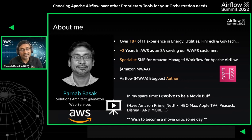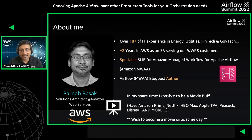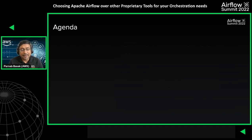Let me tell you briefly about myself. I am Parna Pasak, and I am a solutions architect working for Amazon Web Services for our worldwide public sector customers. I also double up as a specialist SME for Amazon Managed Workflow for Apache Airflow — AWS's managed orchestration service for Apache Airflow — helping our customers effectively adopt the service.